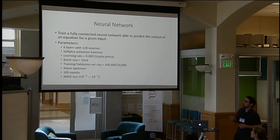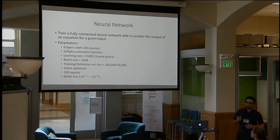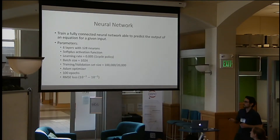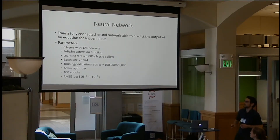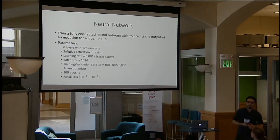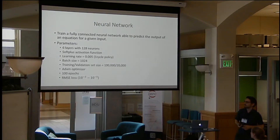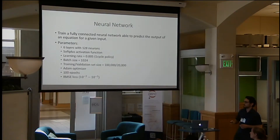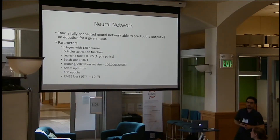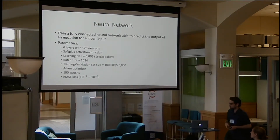We train a fully connected neural network able to predict the output of a function given its input. After 100 epochs, we reach an RMSE loss between 10 to the minus 3 and 10 to the minus 5 for these 100 equations.